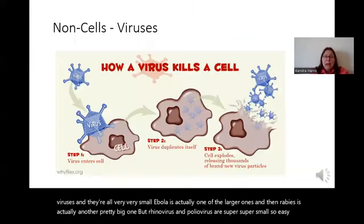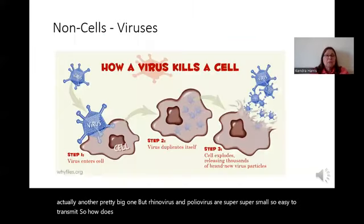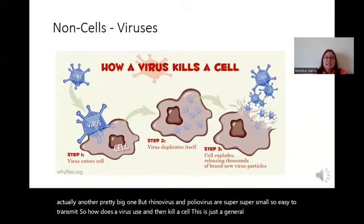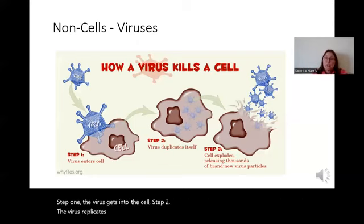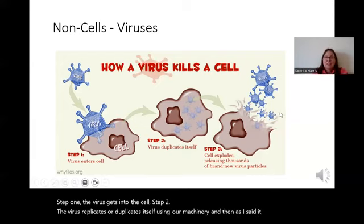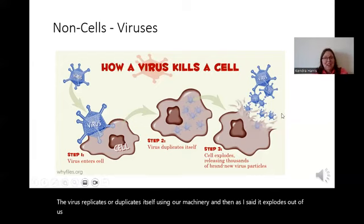How does a virus use and then kill a cell? This is just a general overview. Step one: the virus gets into the cell. Step two: the virus replicates or duplicates itself using our machinery. And then, as I said, it explodes out of us and goes on to infect lots of other poor victims.